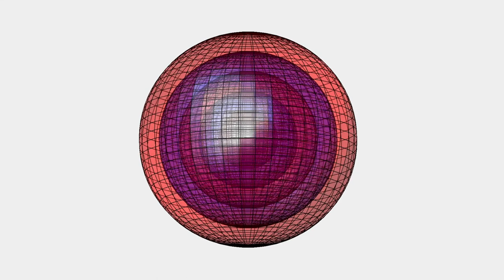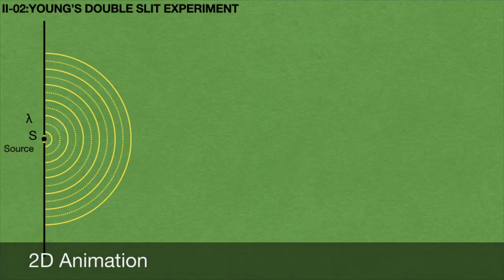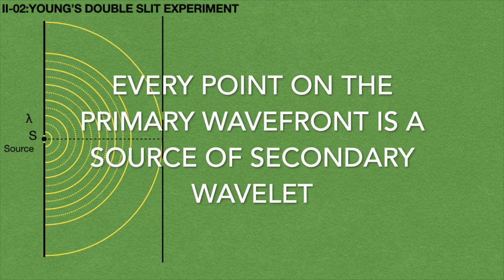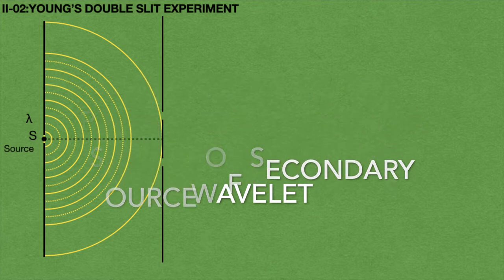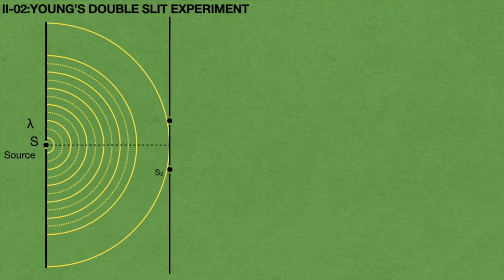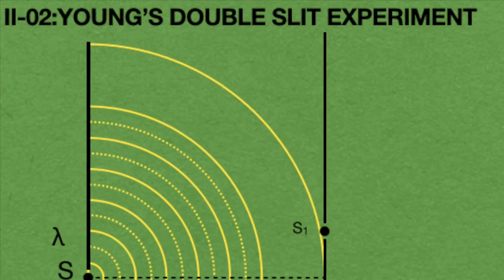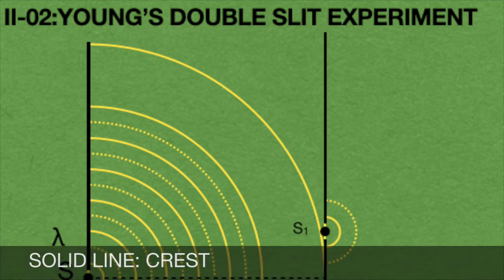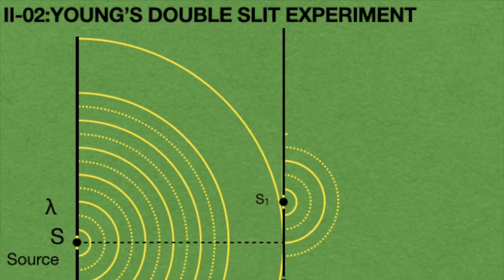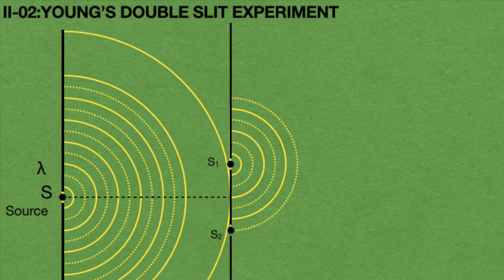This is a 3D analogy. Now we will look into the 2D animation. In the 2D animation, consider a crest wave incident on two slits at any instant. According to Huygens' principle, every point on the primary wavefront is a source of secondary wavelet. Hence these two slits S1 and S2 will act as two sources. Spherical light waves come from S1 in the form of crest and trough. In the 2D animation we can represent them as semi-circular shapes only.